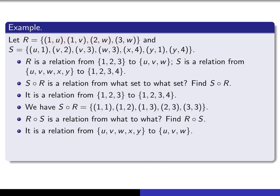S relates x to 4, but R doesn't relate 4 to anything, so that doesn't go anywhere. Y relates, I'm sorry, S relates y to 1, and 1 is related by R to both u and v, so we'll have both (y,u) and (y,v). And finally, S relates y to 4, but R doesn't relate 4 to anything, and so that doesn't go anywhere. So this is what we get for the composition of S composed with R.